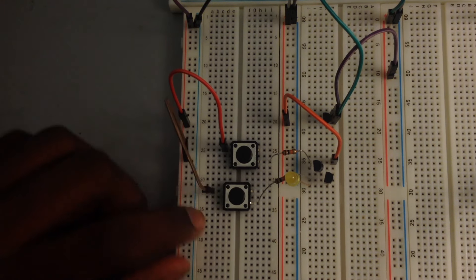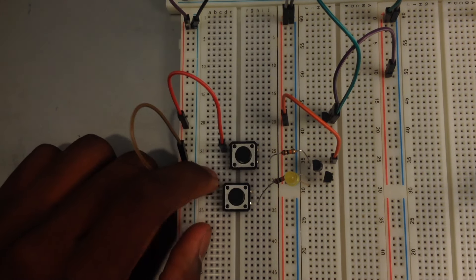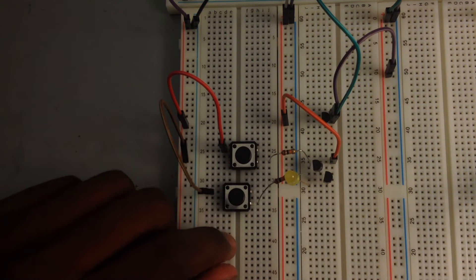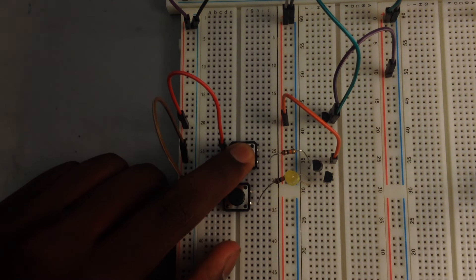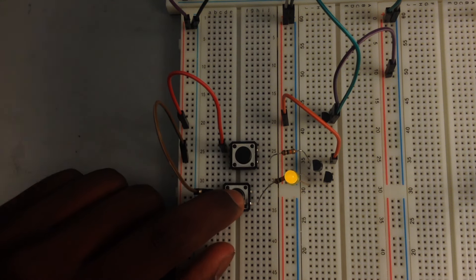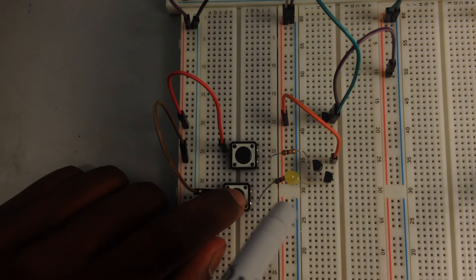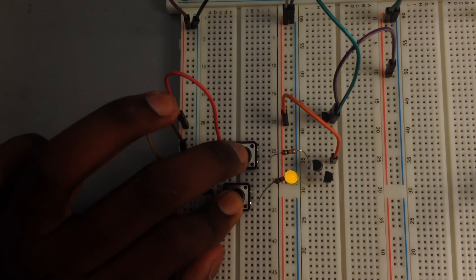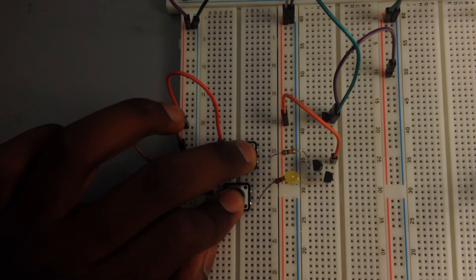So let's fill in the truth table. So when they're both 0, output is 0. When A is 1, output is 0. When B is 1, output is a little bit 1, but I'll tell you how to fix that later. But when A and B are 1, output is 1.